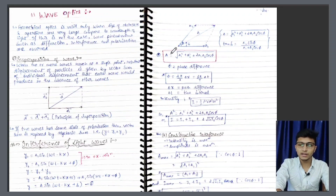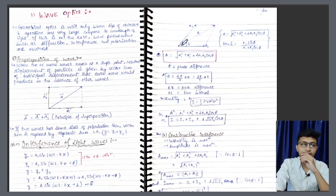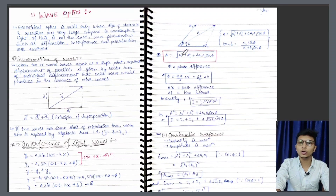Basic jo cheez hai, suppose ye ek light wave hai — aur in dono ke beech ka phase difference kitna hai — ye hai phase difference. Ham maan ke chalte hain phi hai. Aur phi agar phase difference hai, to resultant jo amplitude aata hai, that is similar jaise hum log vector mein solve karte hain: under root of a1 square plus a2 square plus 2 a1 a2 cos phi. Aur yahan pe phi kya hai — phase difference between two waves.